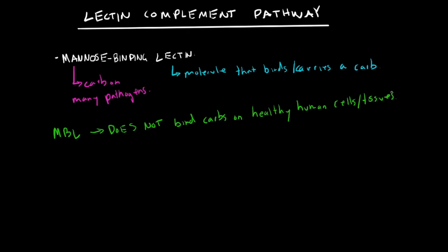Okay, so how does this process work? We have MBL here. It is going to bind to what is called MASP. Now, what is MASP? It is going to act like a convertase.